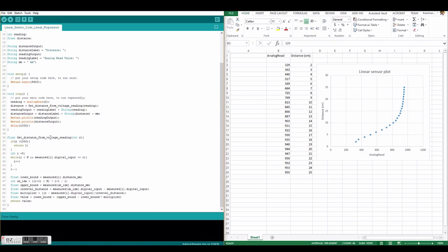So in this get distance from voltage reading we are passed the int r which corresponds to the analog read that we get from the Arduino. From there we check if r is greater than a thousand which means that the CDS cell is actually receiving maximum light. That actually corresponds to the minimum distance of one. So we return one here.